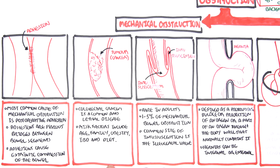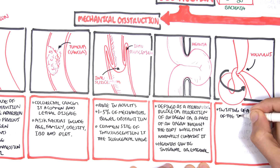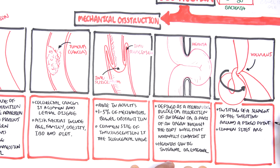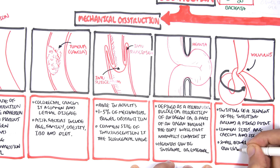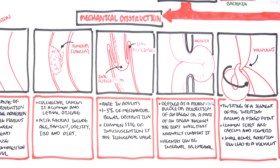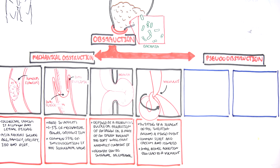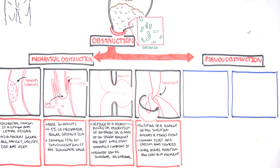The last type of mechanical obstruction is the volvulus, which is twisting of a segment of the intestine around a fixed point. Common sites include the cecum and sigmoid area of the colon. A small bowel adhesion can also lead to a volvulus. So those are the five examples of mechanical obstruction: adhesions, cancer, intussusception, hernia, and volvulus.